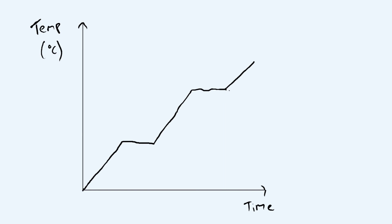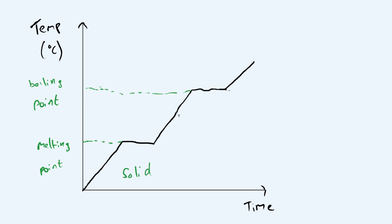This temperature where the flat part occurs during melting is the melting point — the temperature at which you convert from a solid to a liquid. Then this temperature is the boiling point, where it converts from liquid to gas. The important parts of the graph are these flat sections where you're supplying heat but the temperature is not increasing, because that is the latent heat being used to convert from one phase to another.